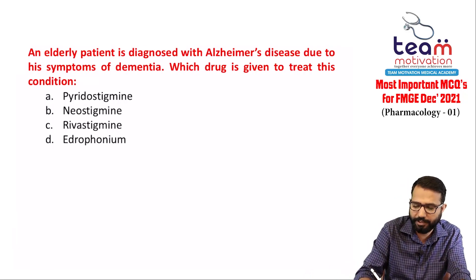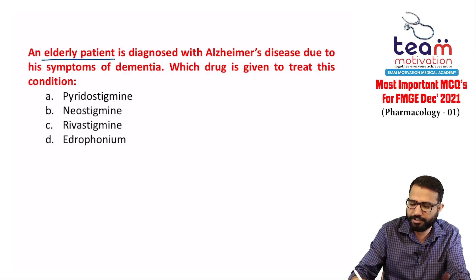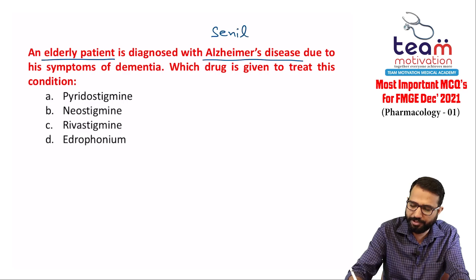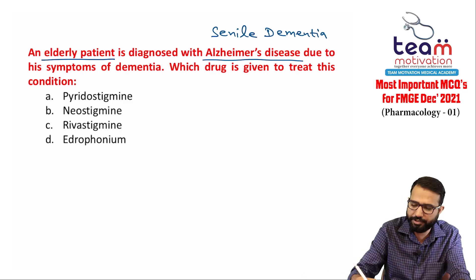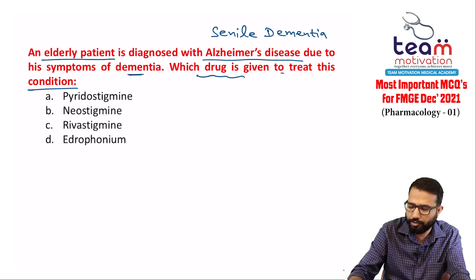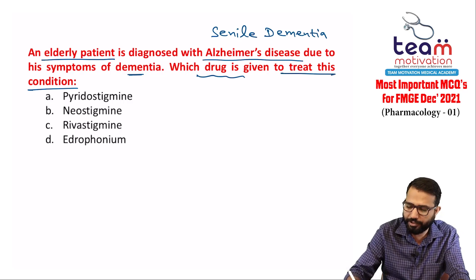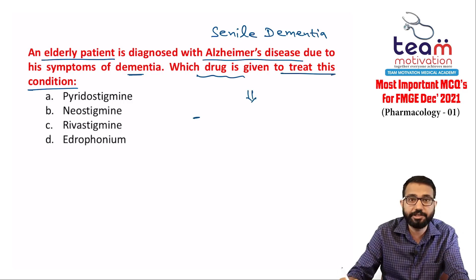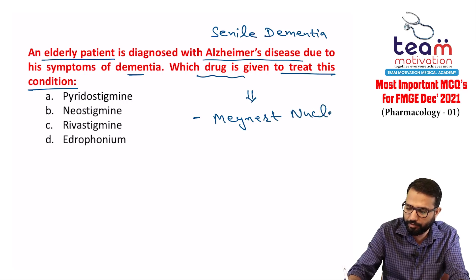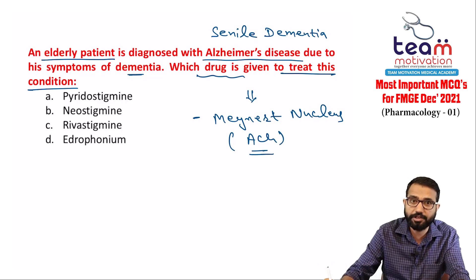Next question: an elderly patient is diagnosed with Alzheimer's disease (senile dementia). Which drug is given to treat this condition? In Alzheimer's disease, there is degeneration of the nucleus basalis of Meynert, which stores acetylcholine. Degeneration decreases acetylcholine levels.